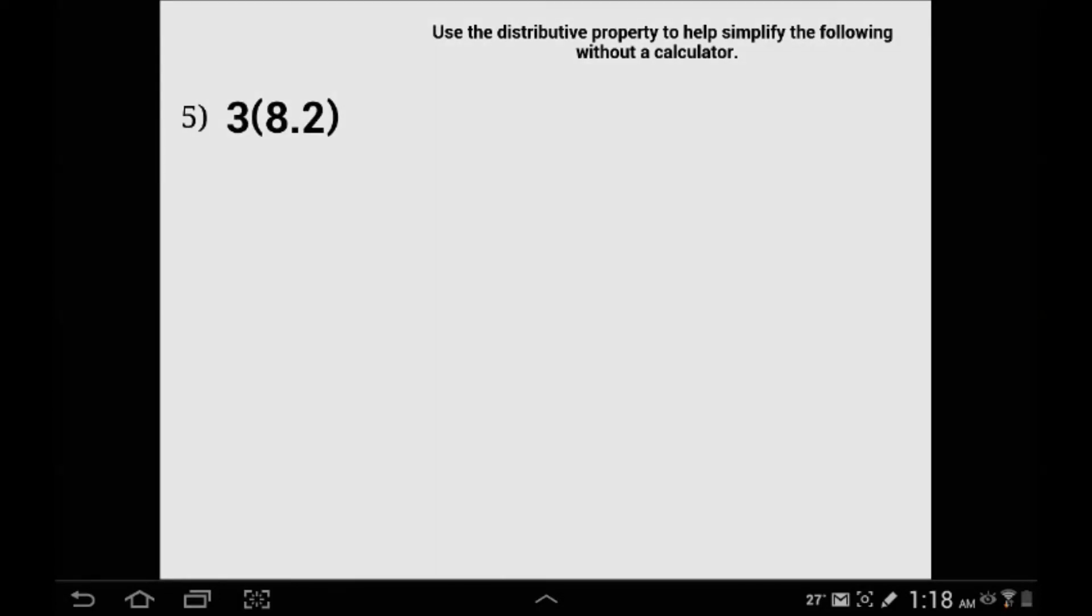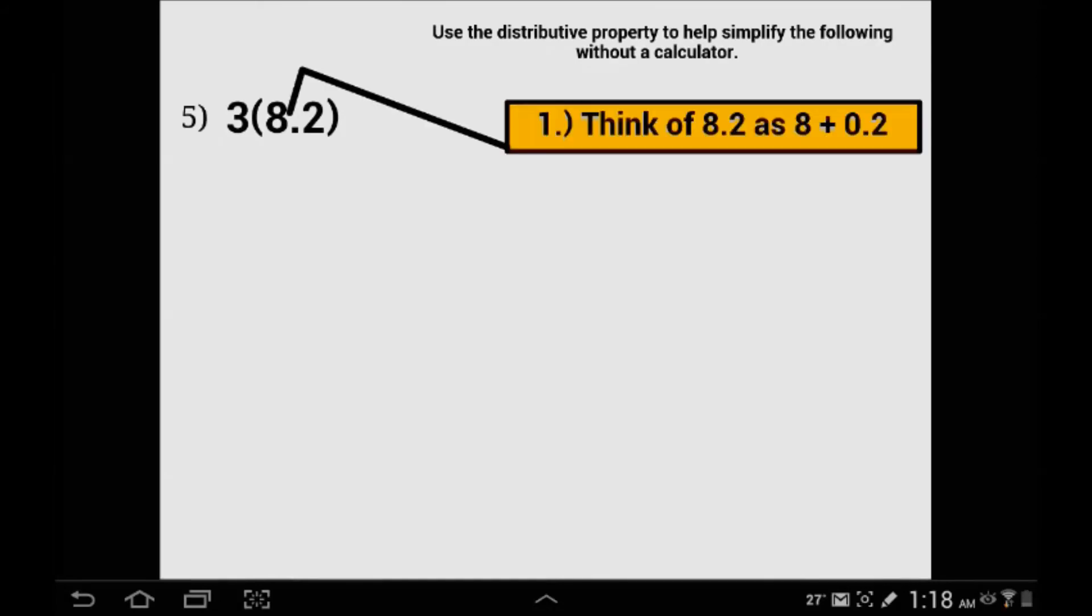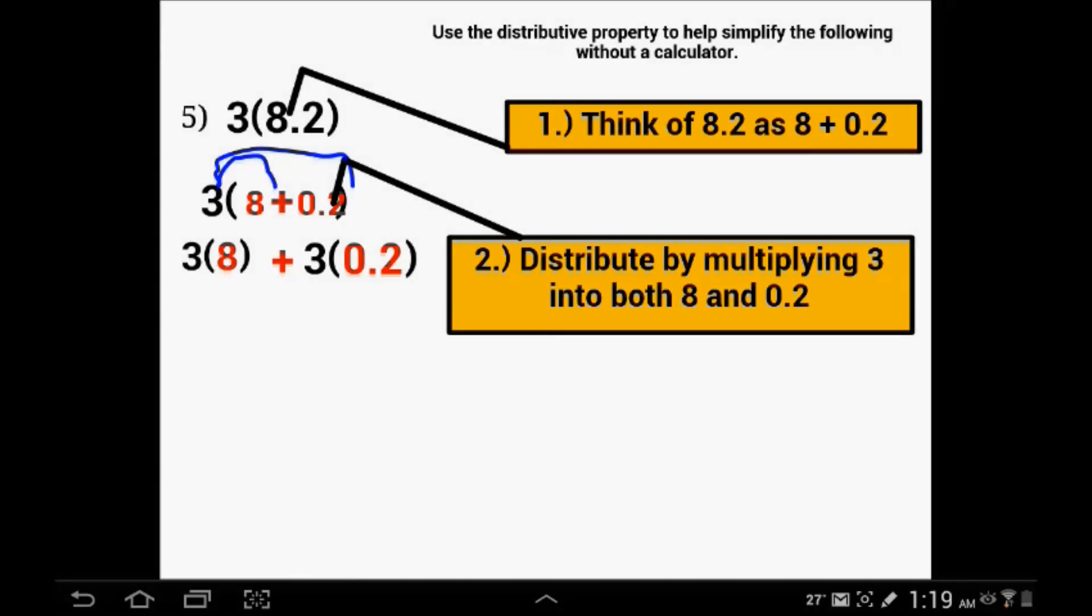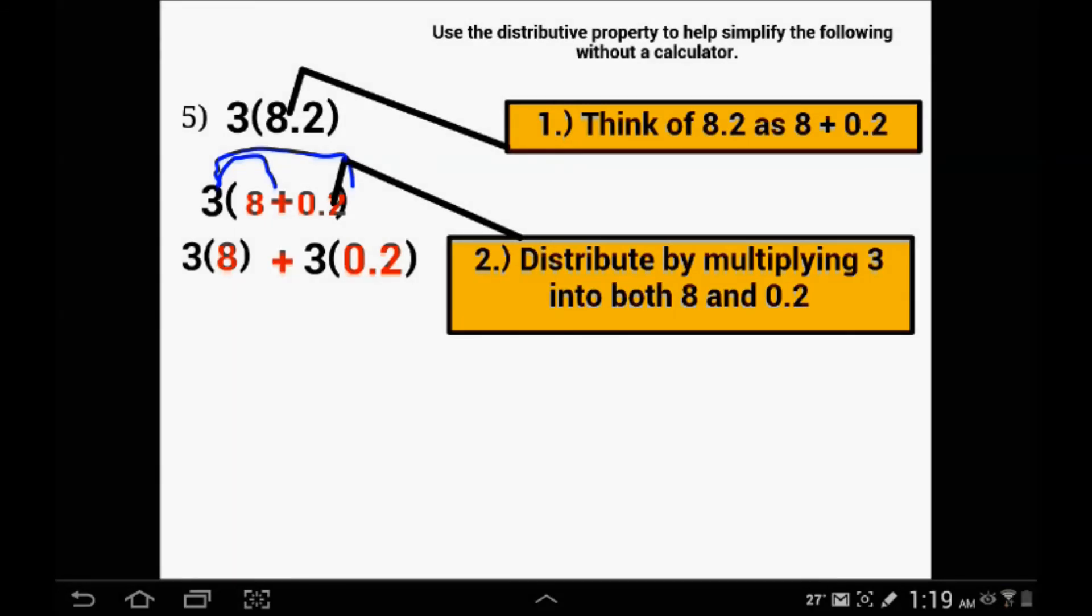Same kind of problem here. We have 3 times 8.2. We are going to break up 8.2 into 8 plus 2 tenths. Make sure you do this step of rewriting the problem. Now we are going to distribute the 3 into the 8 and into the 2 tenths: 3 times 8 and 3 times 2 tenths. 3 times 8 is 24.